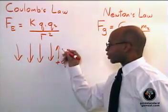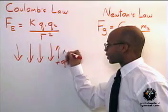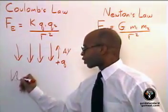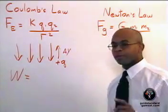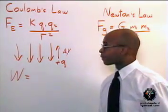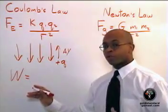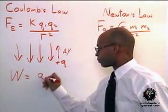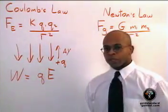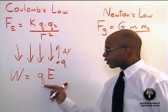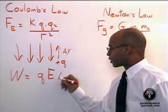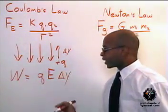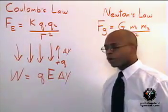If we were to push this charge a distance, delta Y, then we can calculate the work done. Work being force times distance, and the force we saw earlier in the electric field is QE. So work is force times distance, delta Y. So the work in an electric field is given by QE delta Y.